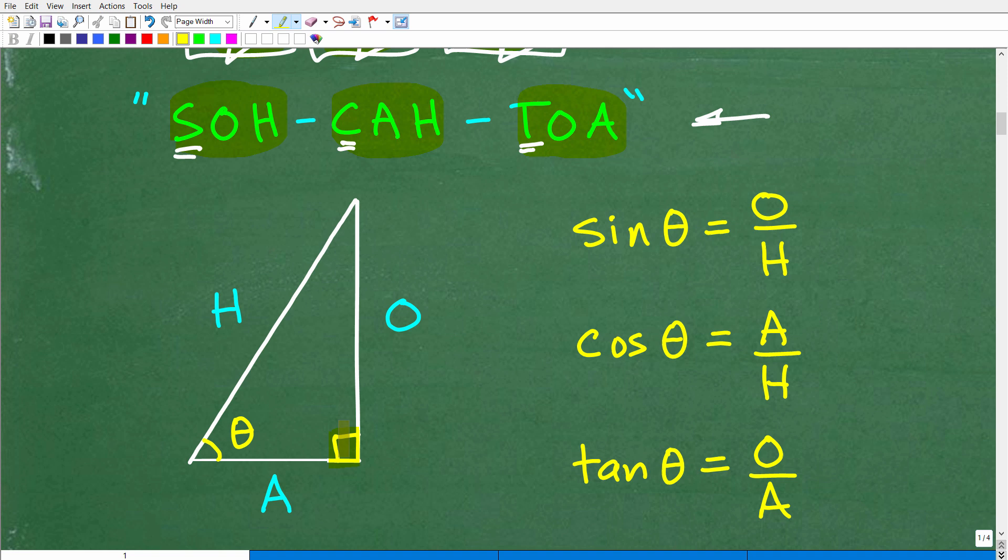All right, so here's the way this SOH-CAH-TOA works. Basically, you just want to construct a nice, lovely little right triangle. So here is a triangle, and this is a right triangle. We're not talking about any run-of-the-mill triangle. We're specifically talking about a right triangle, 90-degree angle right here in one of the corners. So let's suppose we have some angle right here, theta, right in this corner here. What we want to do is kind of label the respective sides of this right triangle.